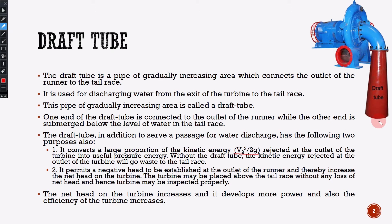The second point is it permits a negative head to be established at the outlet of the runner, thereby increasing the net head on the turbine. The turbine may be placed above the tailrace without any loss of head, and hence the turbine may be inspected properly. Ultimately, the net head increases, the power increases, and the efficiency of the turbine also increases.